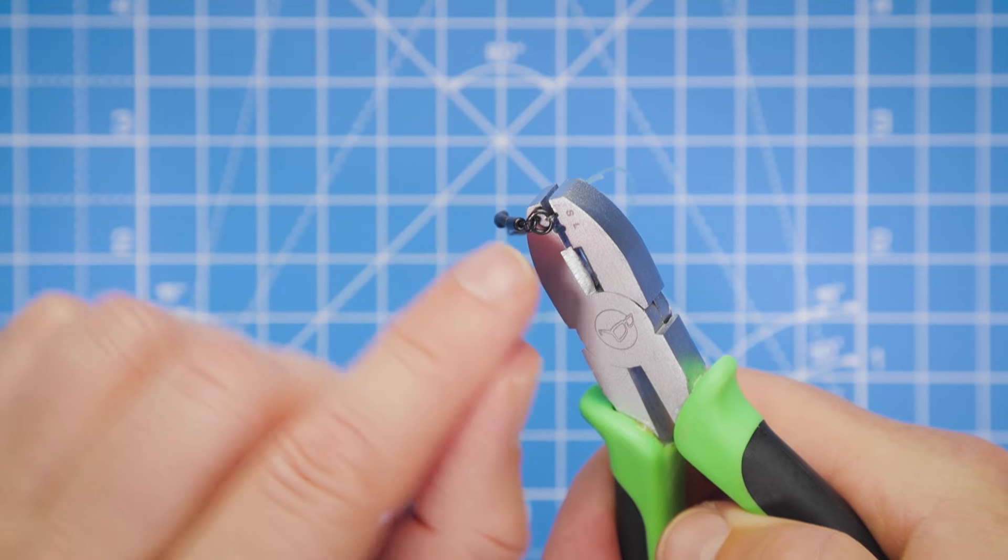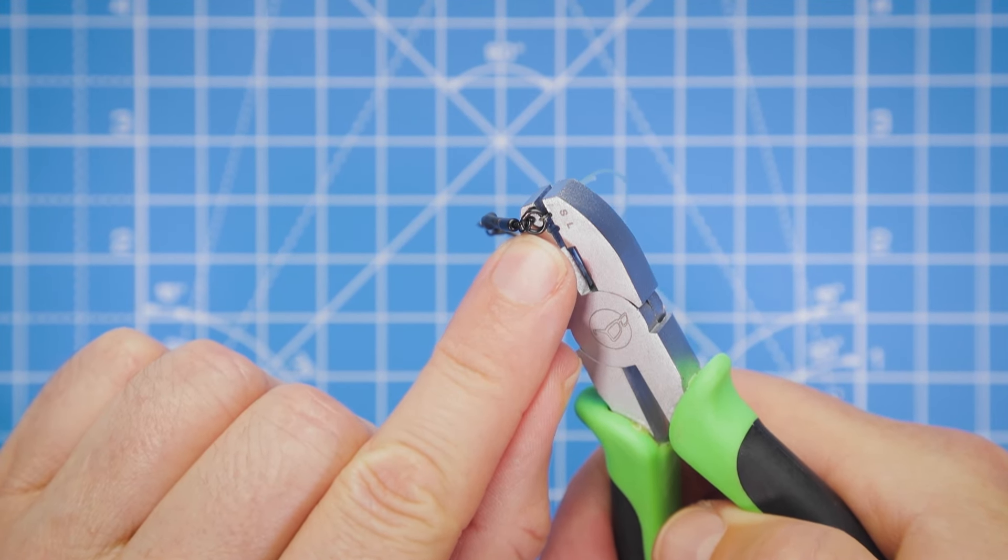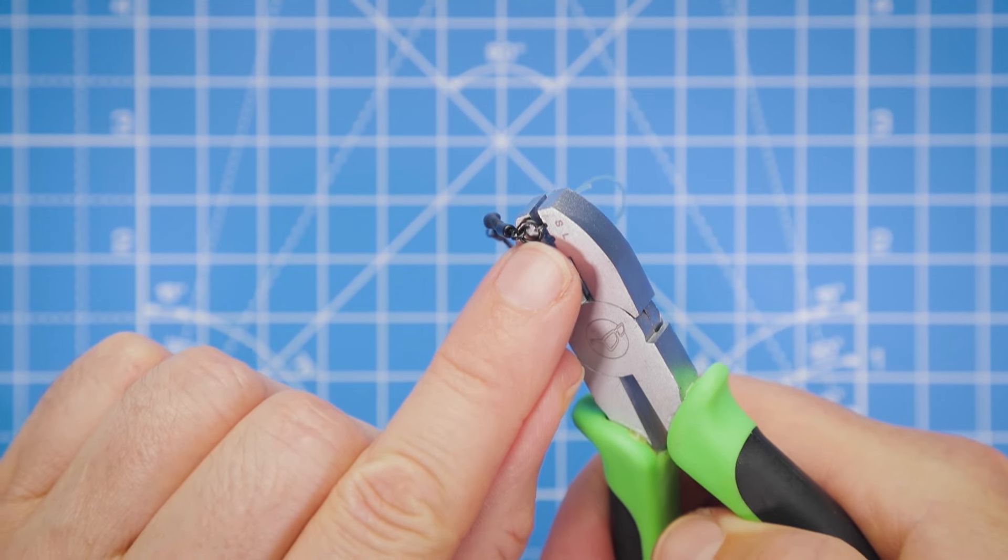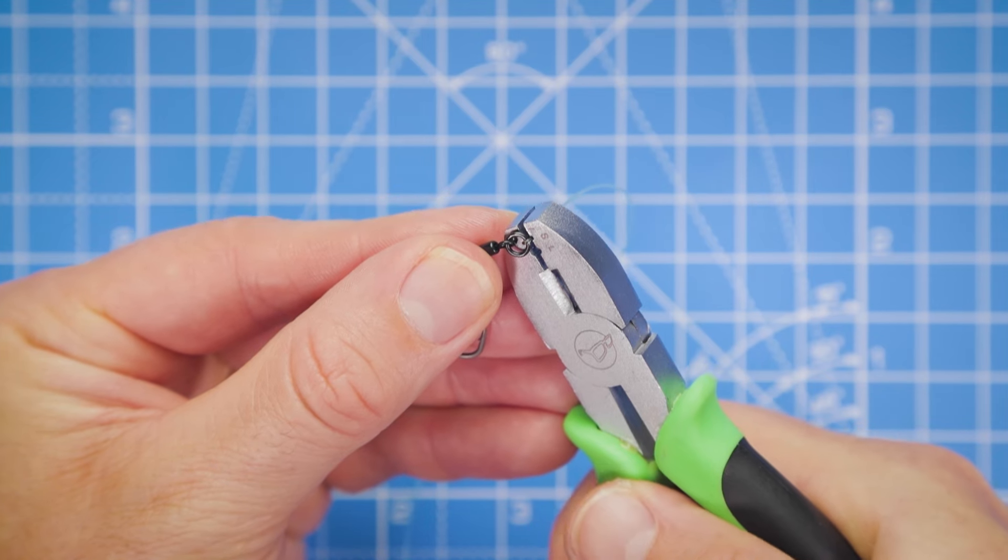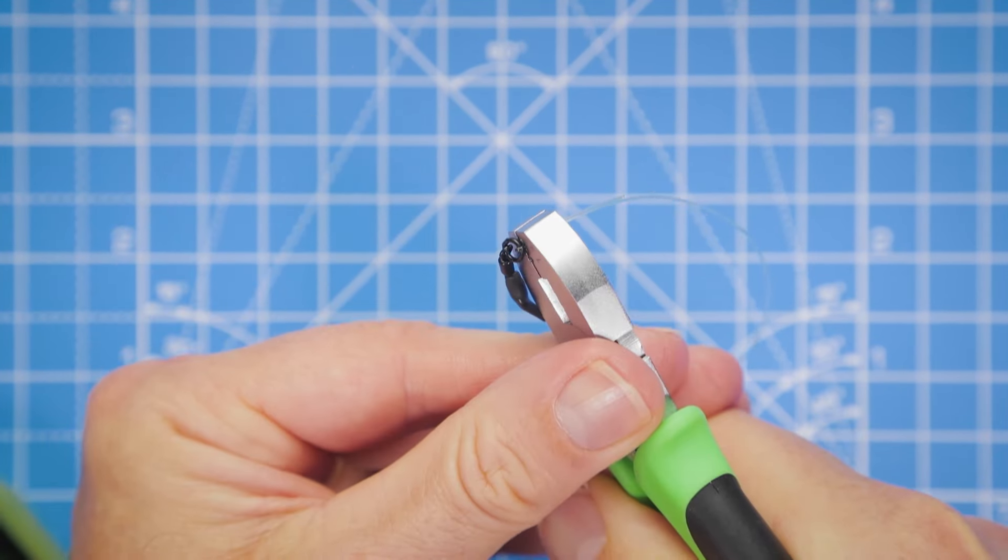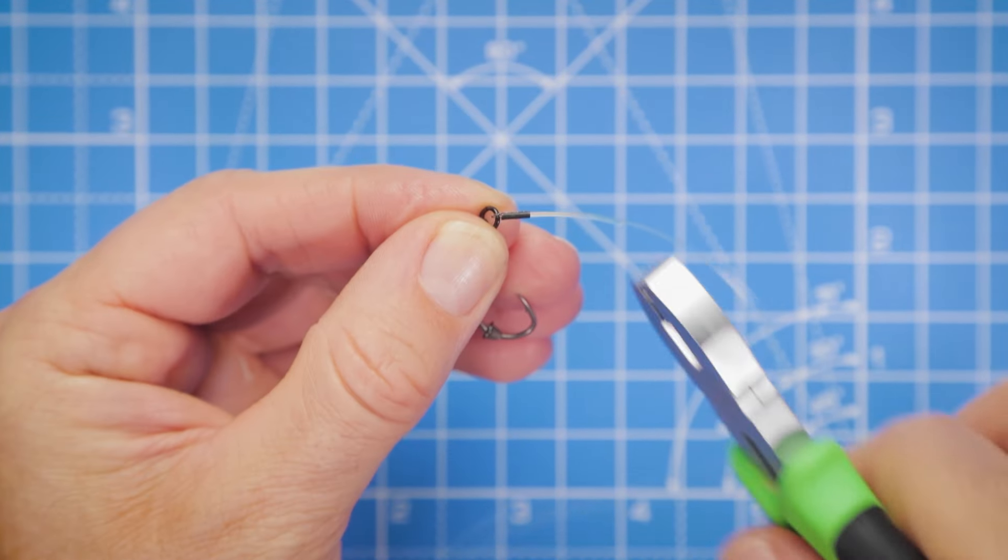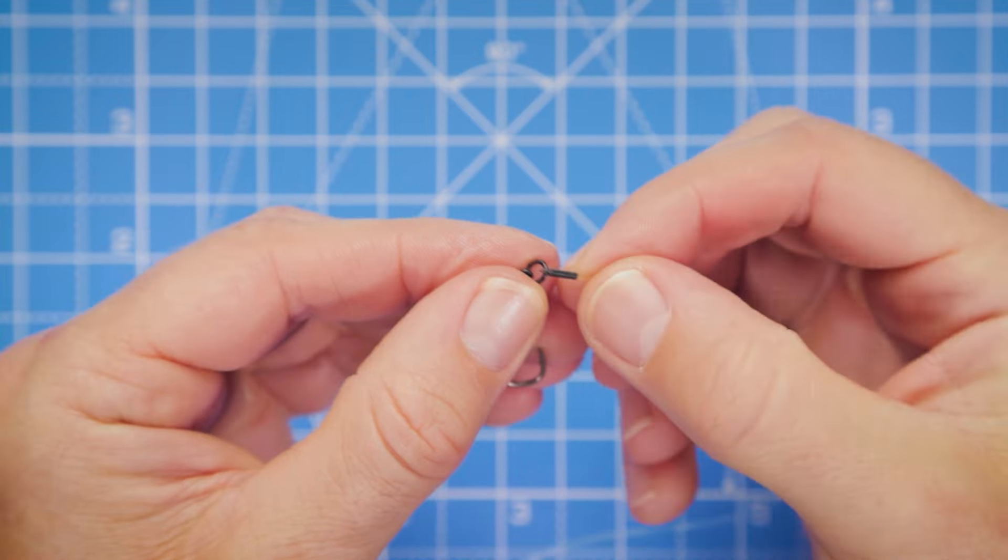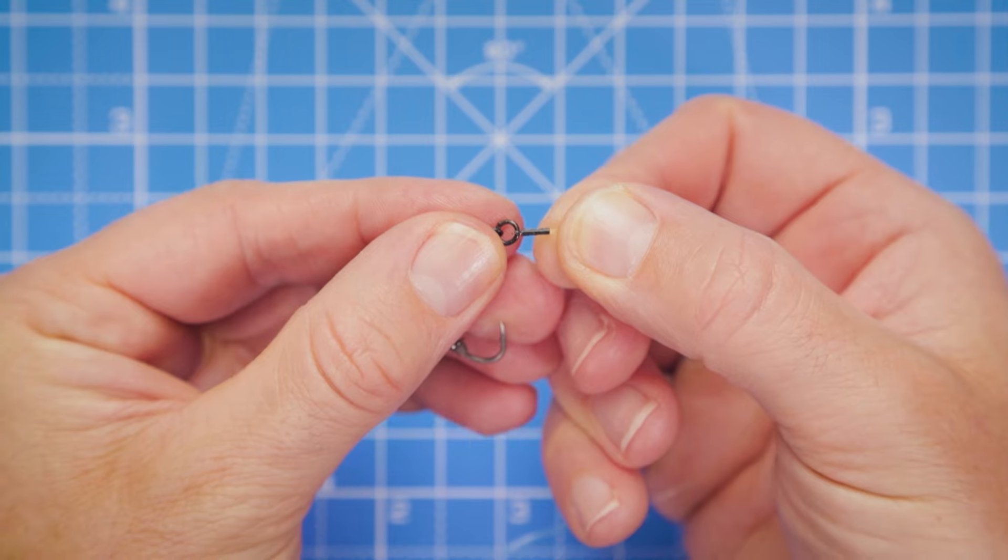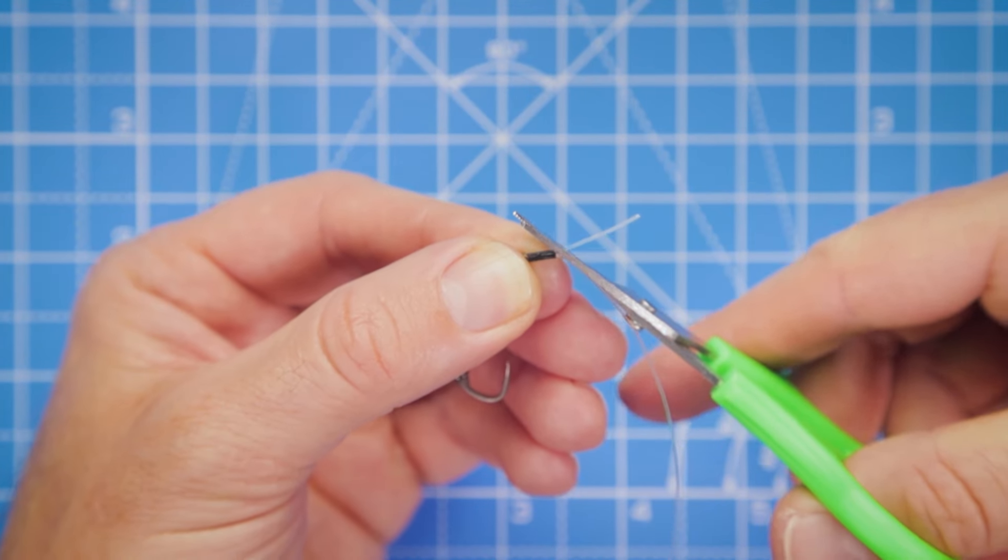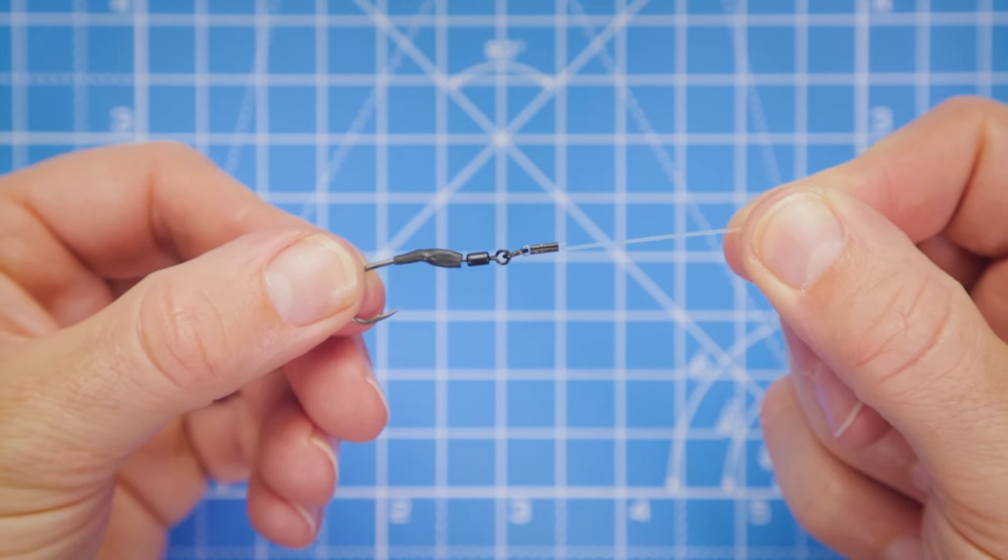Now we need to compress the crimp and secure it into place. It's vitally important that you place the right crimp into the right groove on the crimping tool. We've got the small crimp into the groove that's marked S for small, and then I'm just going to squeeze that crimping tool down to compress the crimp. We've got a really good, secure, strong join there between the spinner swivel and the boom section. Just trim away the tag end. That's one end of the boom section complete.